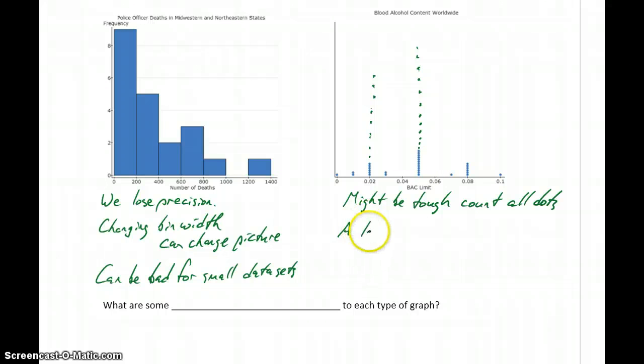A large spread in our data would be hard to picture or represent. Keep in mind for dot plots, every single number has to be represented along this x-axis. So if we consider the police officer deaths that range from 0 to 1400, it would take an incredibly wide, long x-axis to represent all of those.